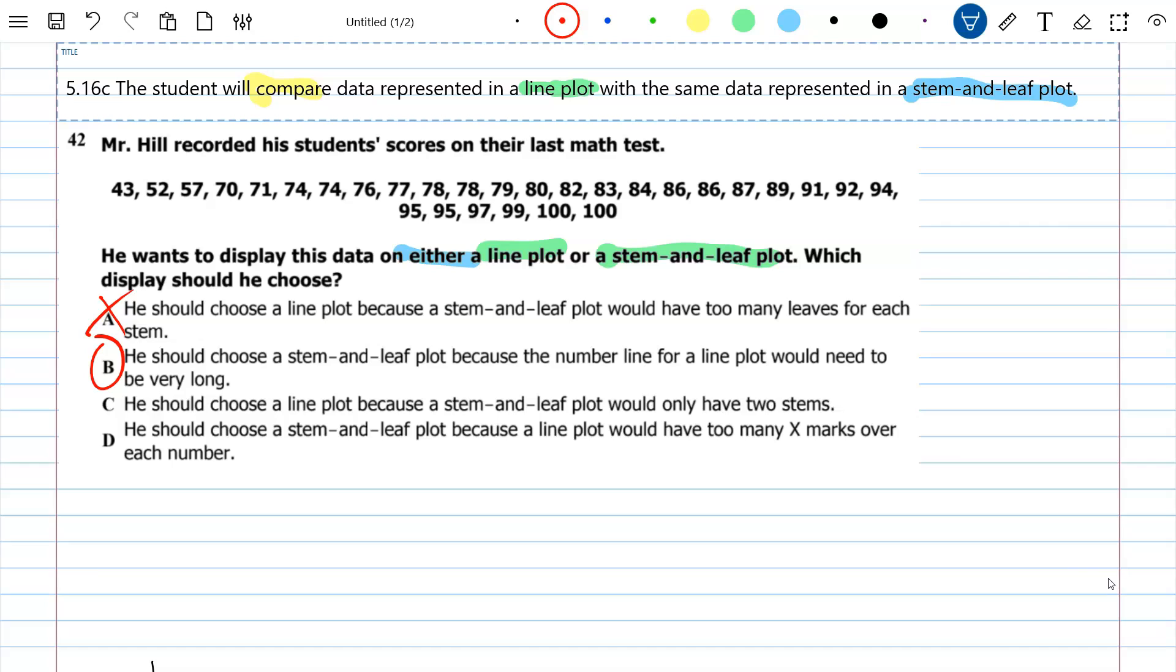He should choose a line plot because a stem and leaf plot would only have two stems. Well, that's not true because if you look, I've got 40s, and I've got 50s, and 70s, and 80s, and 90s, and all the way up to 100, which would be a 10 in the stem. So that's 1, 2, 3, 4, 5, 6 different stems. So that's just incorrect.